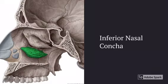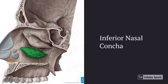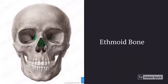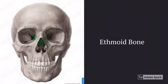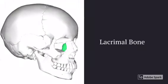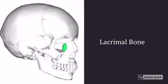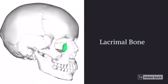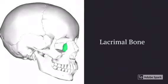The ethmoid bone, highlighted in green, is kind of behind the nose and the eyes. This is the lacrimal bone — it's located in the same place as the lacrimal gland, which is the gland that produces tears.